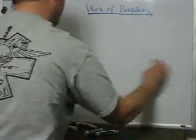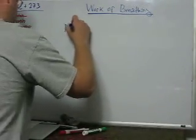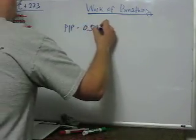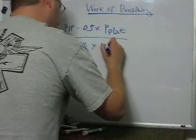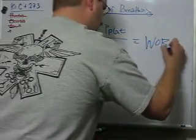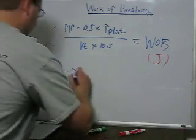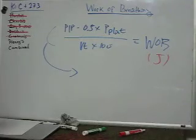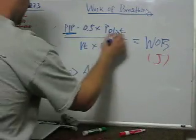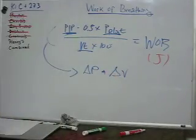Is there a way to make sense of this in day-to-day physics with a formula that's not exceedingly difficult to integrate? There is. If I take 0.5 times the peak inspiratory pressure minus 0.5 times the plateau pressure P-plat, divided by the tidal volume times 100, that equals the work of breathing, and the unit that falls out should be in joules. The most simplified way to look at it qualitatively is simply the change in pressure times the change in volume.